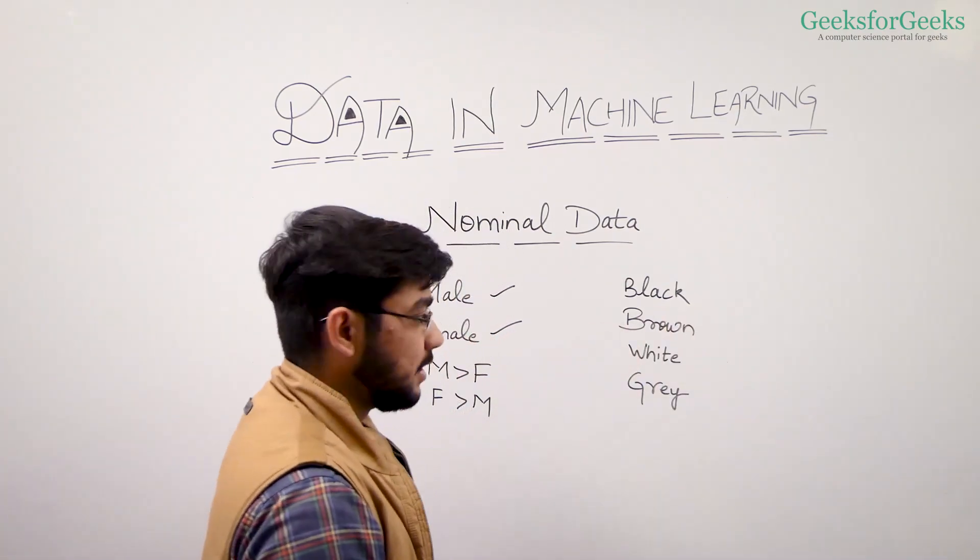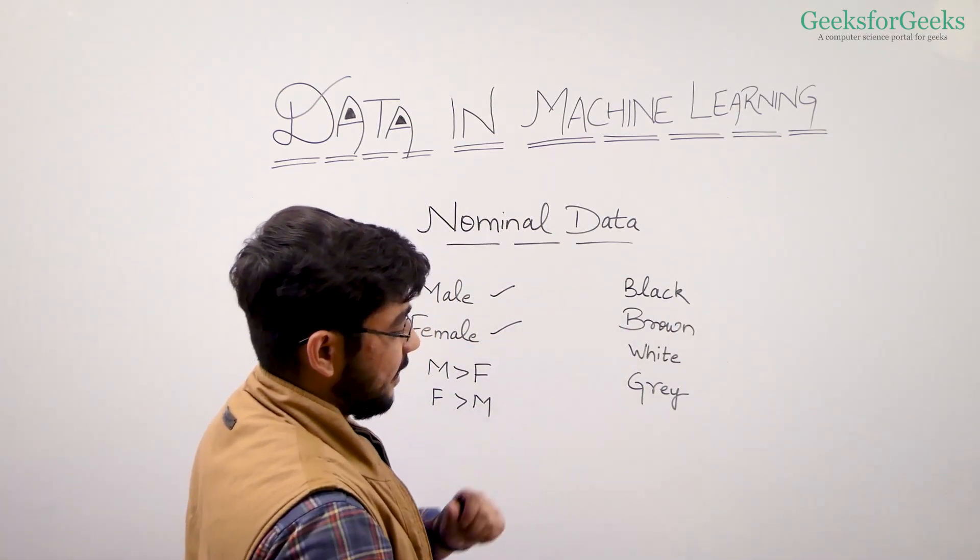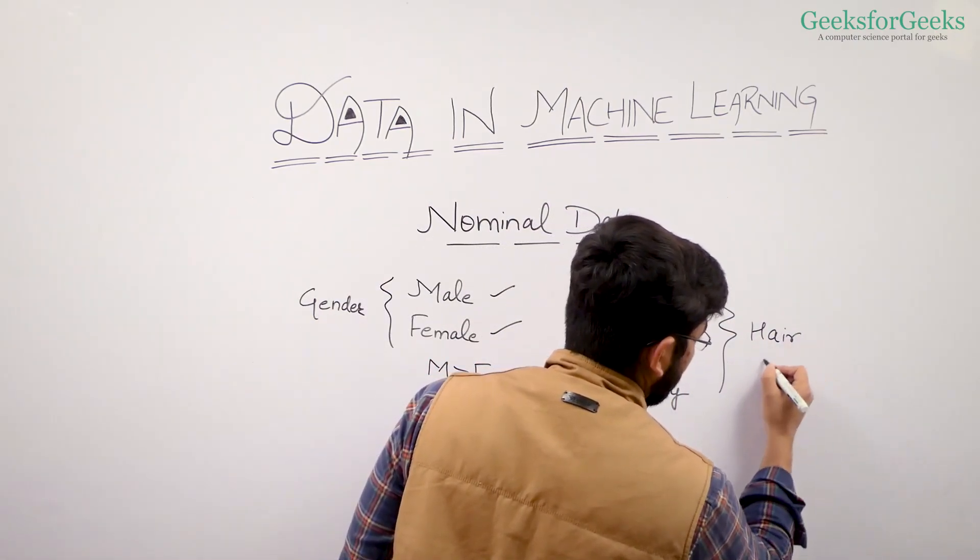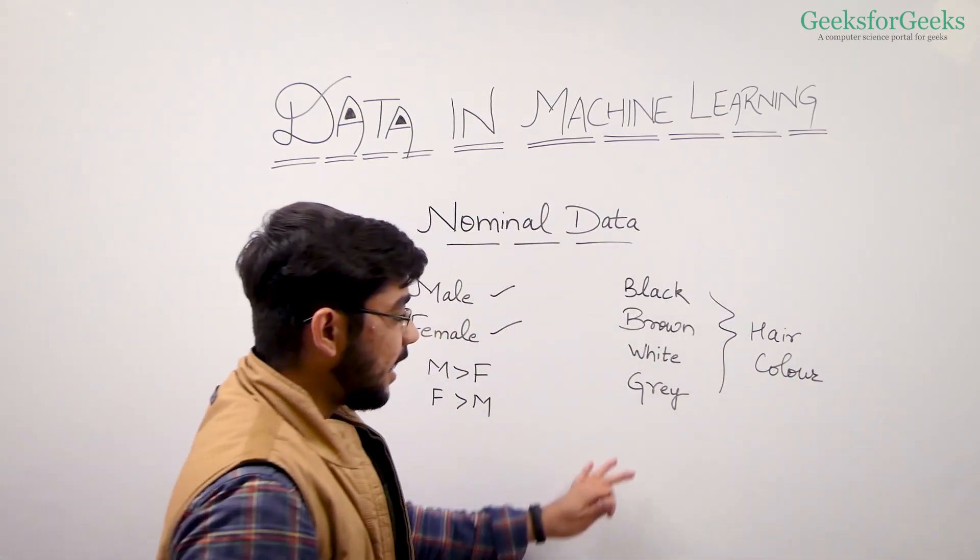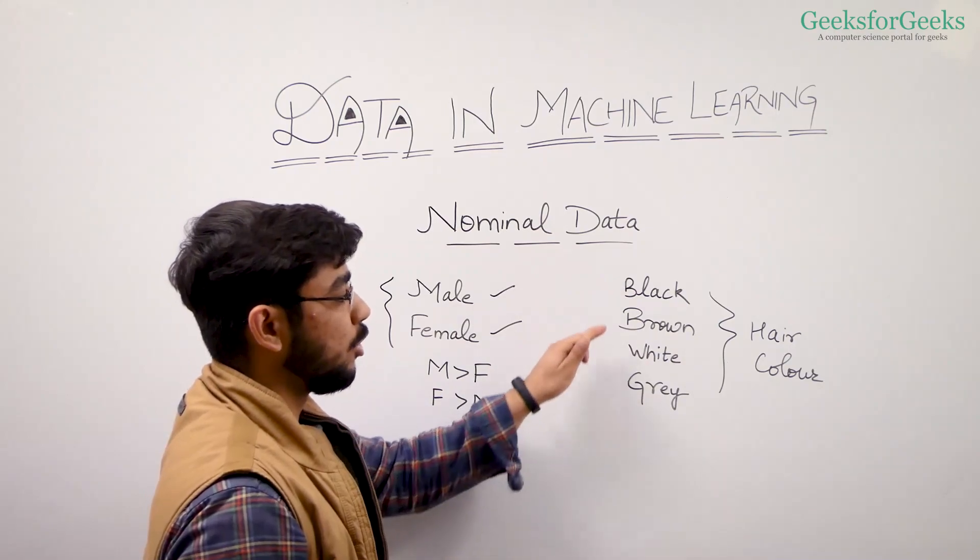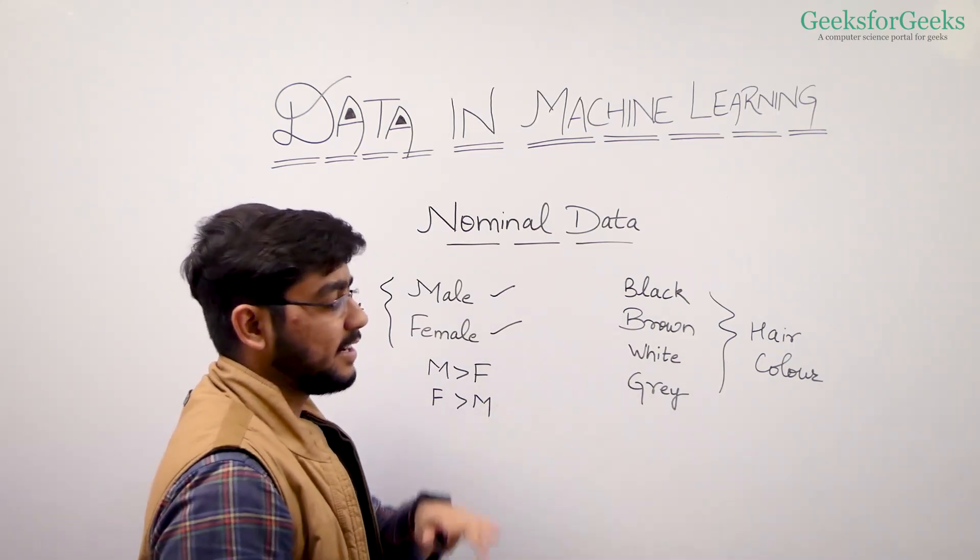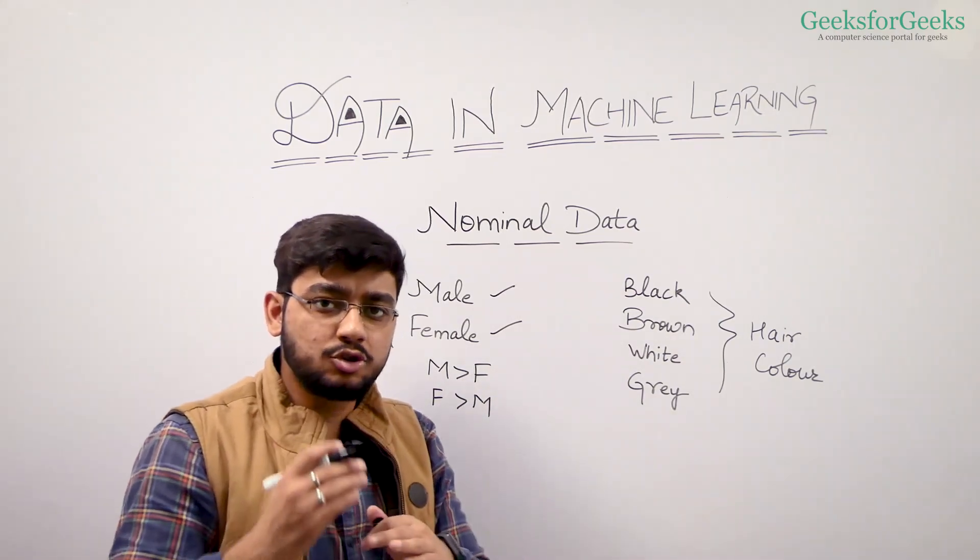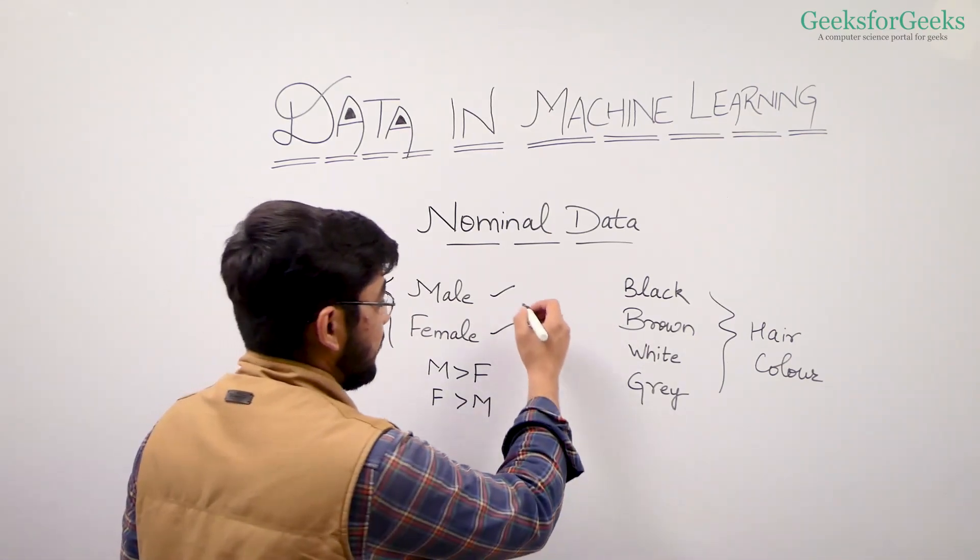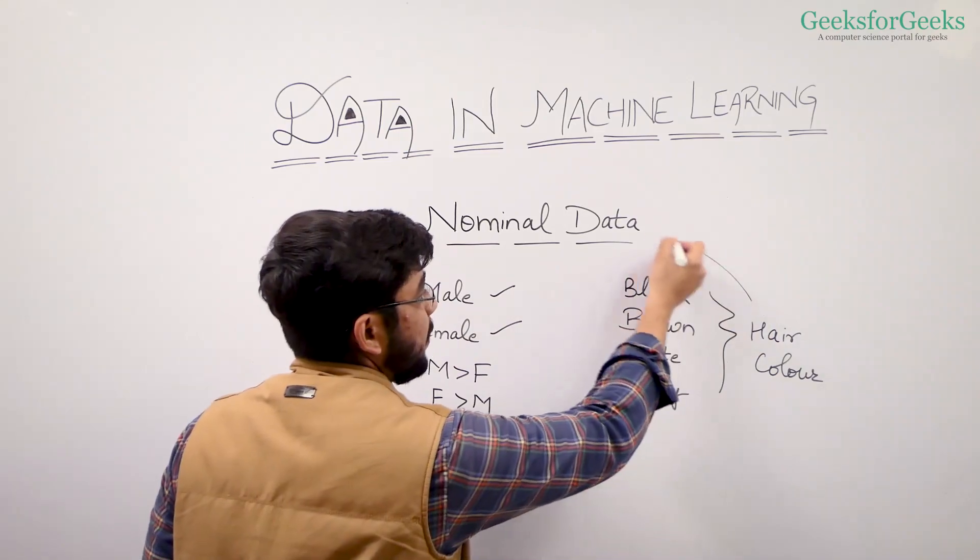Let's take another example: black, brown, white, gray. Let's say these are hair colors. And in this case also, we can't say that black is greater than brown or brown is greater than white or white is greater than gray. There is no natural ordering between this data, so we label these data sets as nominal data.